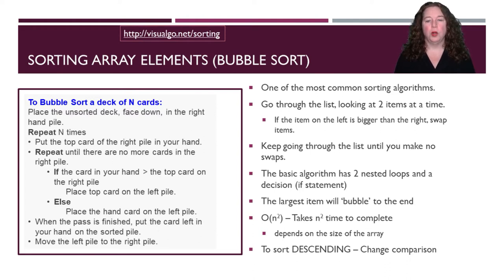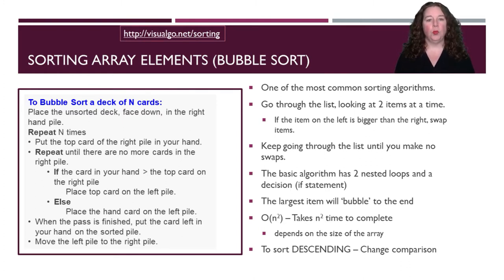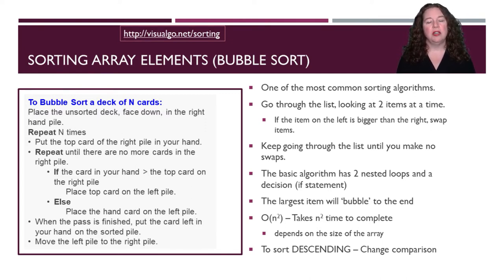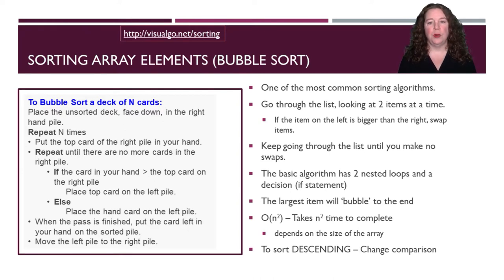Depending on which one's bigger, we're going to switch those again. If they're not bigger, we put down the one in our left hand and pick up the one in the right hand. We keep doing this until we get to the end, then take the entire deck and do it again. We keep repeating this until we never make a switch. The theory in bubble sort is that you will bubble the largest number to the end. Then the next largest number, and so on, until you get all the way through the list.